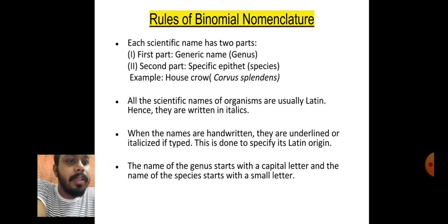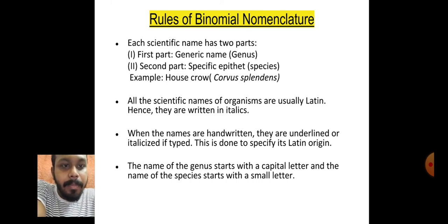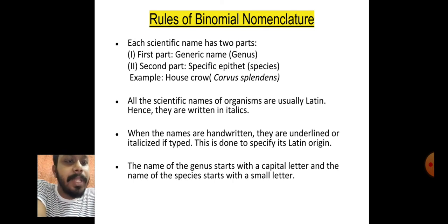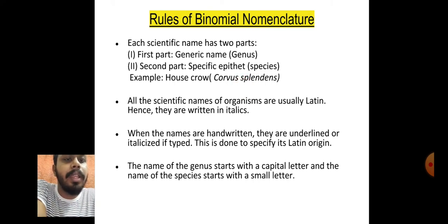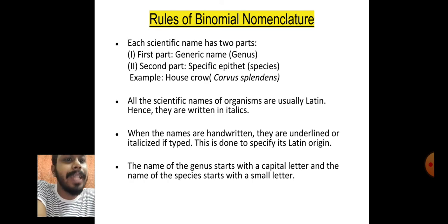This is done to specify the Latin origin of the name. The last rule is that the name of the genus starts with a capital letter and the name of the species should start with a small letter. For example, 'Corvus' starts with capital C and 'splendens' starts with small s. These are the rules of binomial nomenclature.